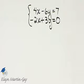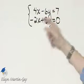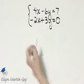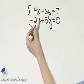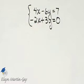Let's solve this system by the addition method. Remember what we want to do, we want to multiply one or both equations through by numbers so that the coefficients of the x's or the coefficients of the y's are opposites of each other.